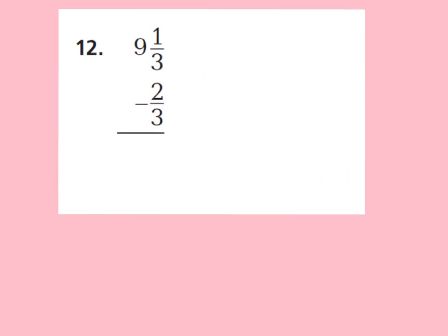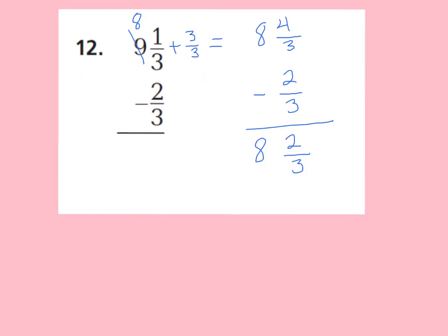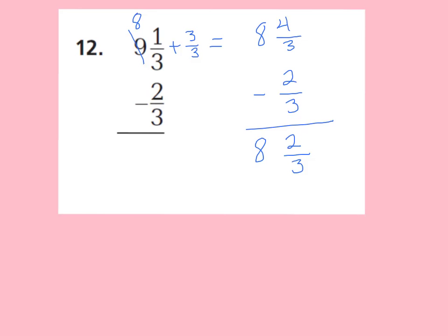For number 12, work on this one on your own, then press play when you're ready to go over the answer. The problem was 9 and 1 third minus 2 thirds. Since I can't take away 2 thirds from 1 third, I renamed it: took a whole from 9, leaving 8 wholes, and added a whole to my 1 third — giving 8 and 4 thirds. Then 4 thirds minus 2 thirds is 2 thirds, and 8 minus 0 is 8. Final answer: 8 and 2 thirds.